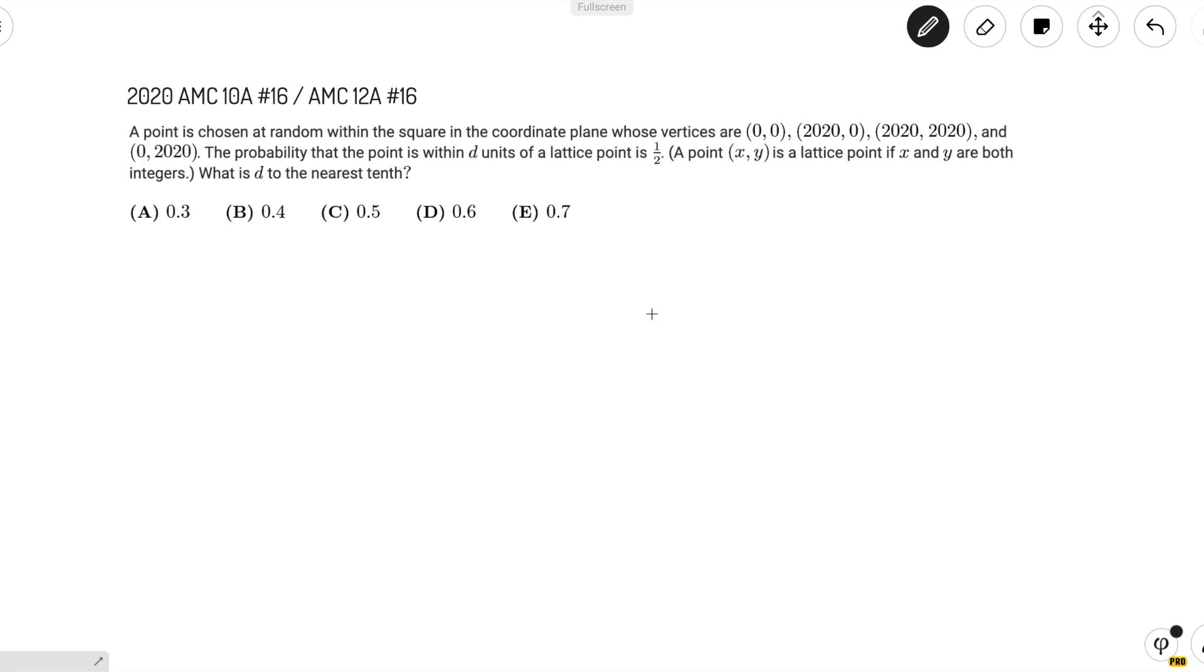The problem reads: a point is chosen at random within the square in the coordinate plane whose vertices are (0,0), (2020,0), (2020,2020), and (0,2020).